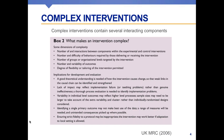This box from the UKMRC talks about what makes an intervention complex. It could be the number of interactions between components in both the experimental and control arms, the number and difficulty of behaviors required by those delivering or receiving the intervention, the number of groups or organization levels targeted, variability in outcomes, and the degree of flexibility or tailoring the intervention permitted. As we move from simple to more complex interventions, this raises a number of both conceptual and methodological issues that systematic reviews have to consider.